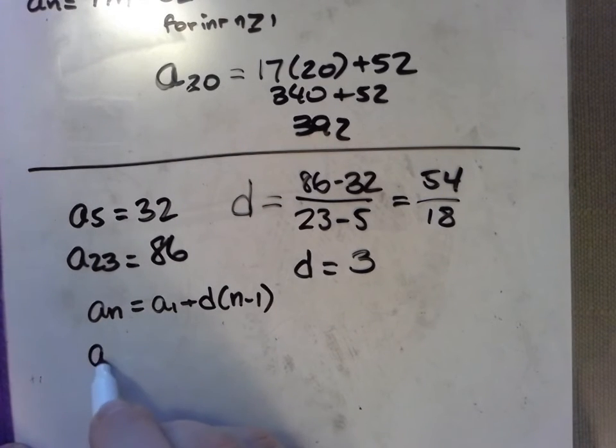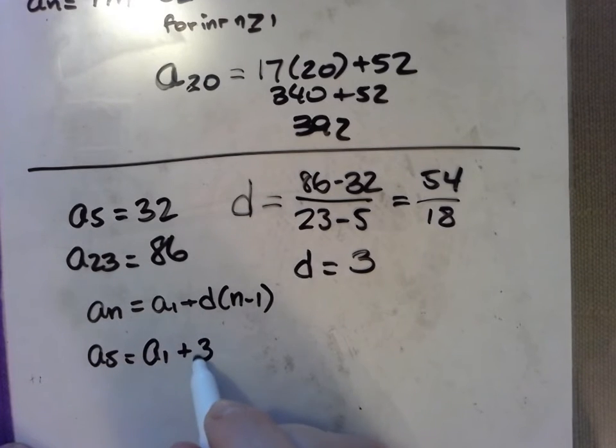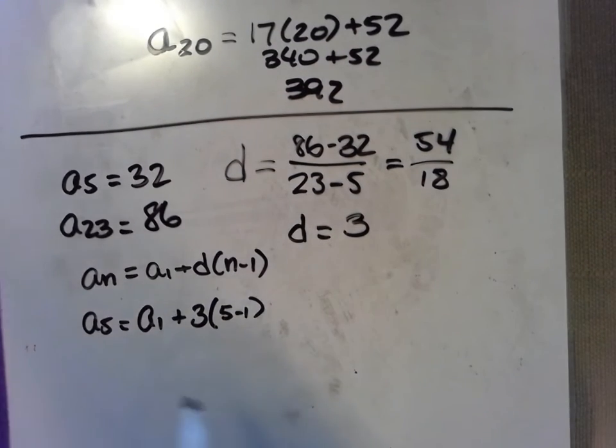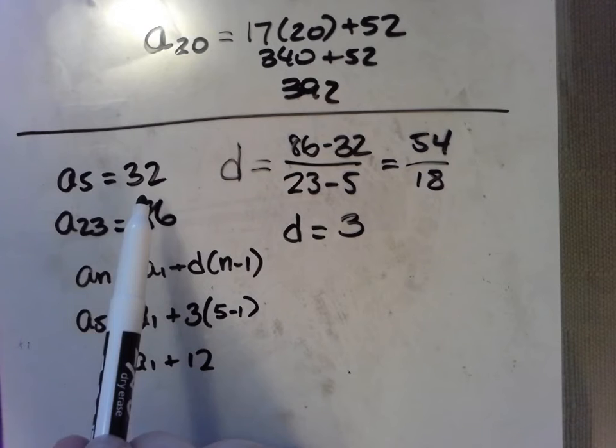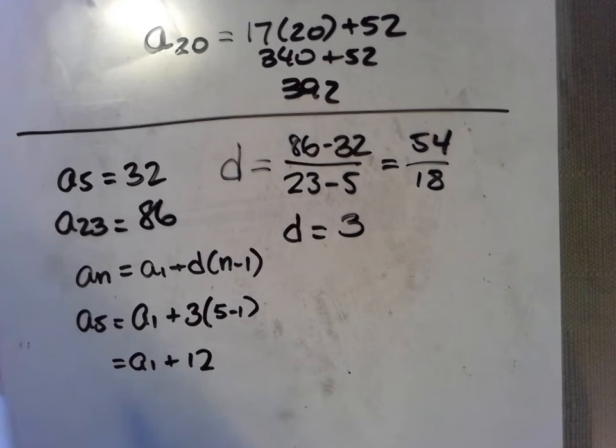The value of my fifth term is the value of my first term. We know the difference is 3, and if we have a 5 here, that means a 5 goes here, and 5 minus 1 makes 4. Let me slide this up a bit. We can find the right hand side is the first term plus 4 times 3, which makes 12, and we can substitute the value of our fifth term, 32, in place of the a sub 5 here.